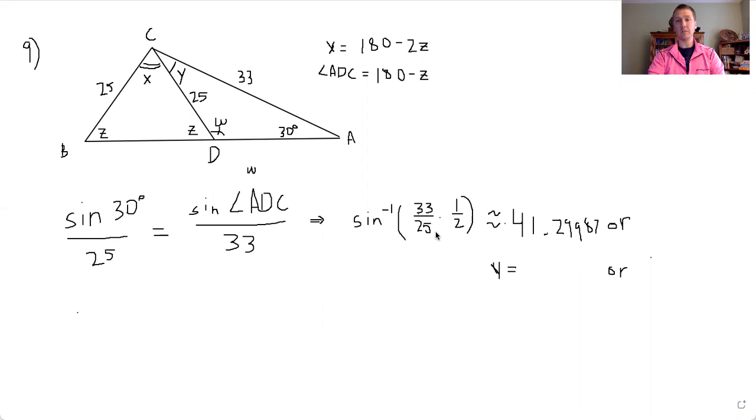So that means that if we take the inverse of this, we can get this unknown angle. So we either get that it is 41.29987 or because there is another angle with that same sine value, we get, and I was just doing the math on this one, we get 180 minus that 41.